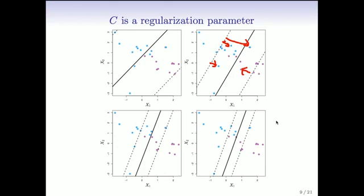The points that are on the wrong side of the margin, and all points inside the margin or on the wrong side, become the effective points controlling the orientation of the margin. The more points involved in the orientation of the margin, the more stable it becomes. So as C gets bigger, the margin becomes more stable, and there's a kind of bias-variance trade-off as we change C — so it's really a regularization parameter.